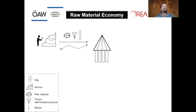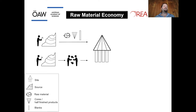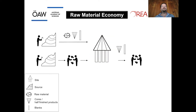Depending on the distance from source to site, materials were brought back either as raw materials, as half-finished products, or as ready-made blanks. A second option is indirect procurement through exchange networks with groups that had access to the desired raw materials. The sites are the places where the materials are processed and used — in some cases entirely used up, in others reworked and reintroduced into distribution networks.